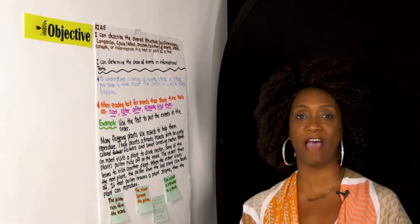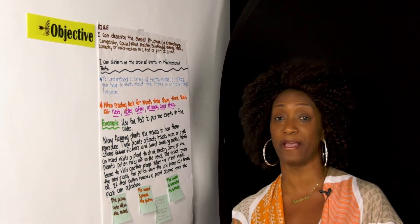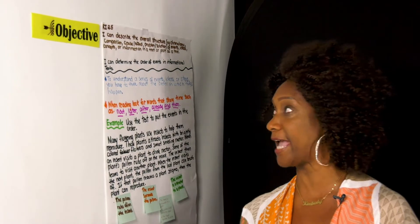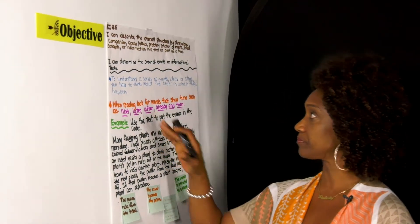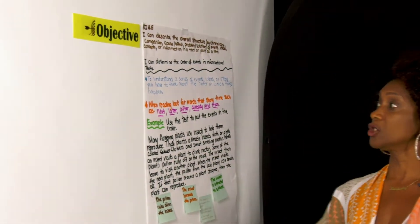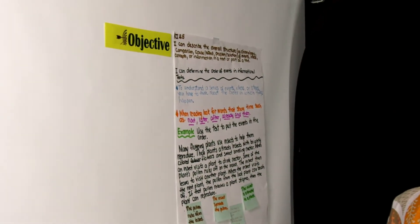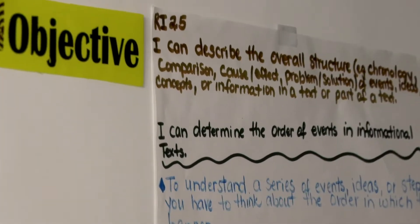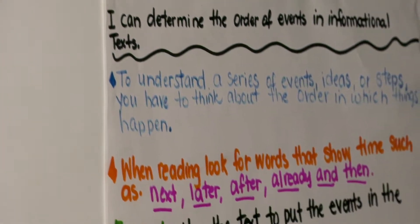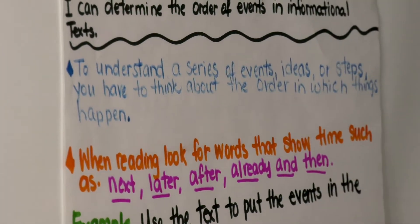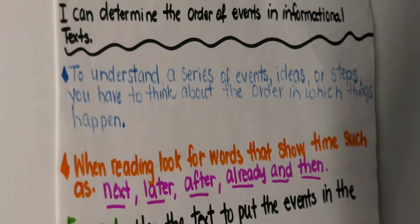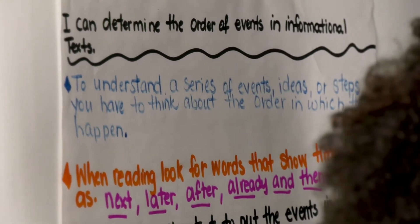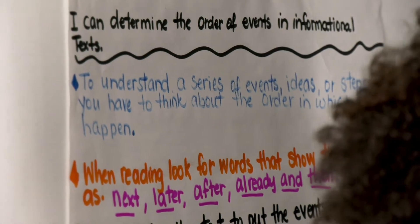Let's get into it, guys. You have your journals — make sure you open it up to today's date. To understand a series of events, ideas, or steps, you have to think about the order in which things happen, and that's a text structure called sequential.